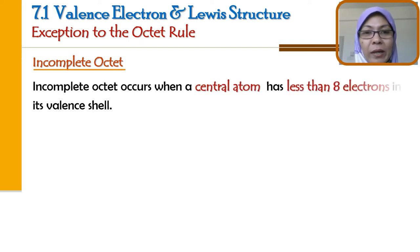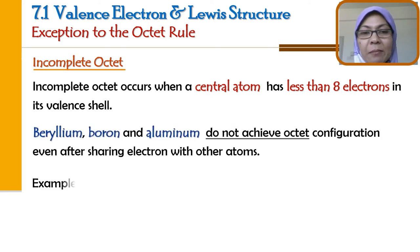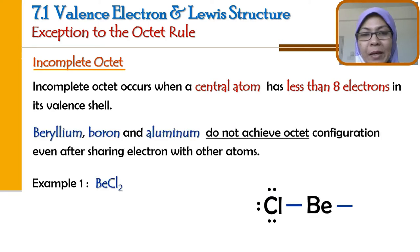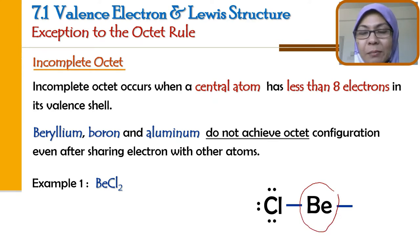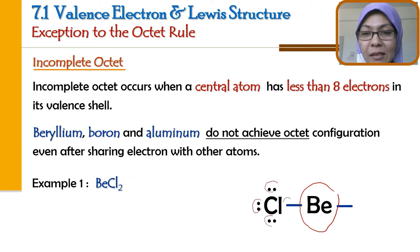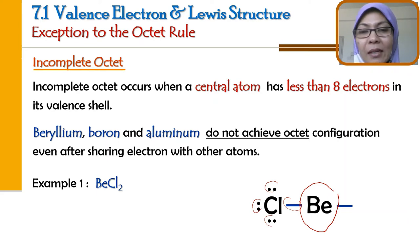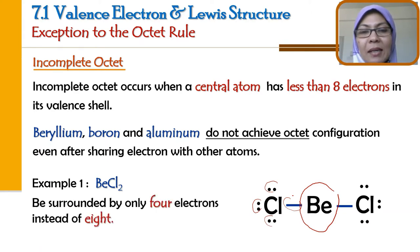Incomplete octet occurs when a central atom — which means the atom in the middle — has less than 8 electrons in the valence shell. For example, this molecule BeCl2. The center atom means this atom, the atom in the middle. Usually, the atom in the middle will have 8 electrons — only then it achieves octet. You see, chlorine has achieved octet: 2, 4, 6, 8, including the electrons they share. But for beryllium, beryllium has less than 8 electrons.